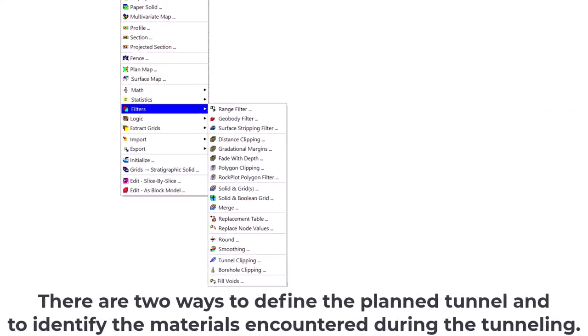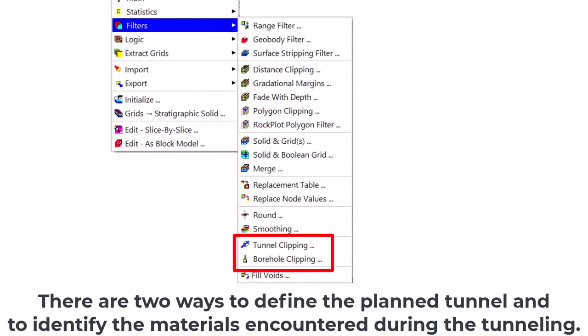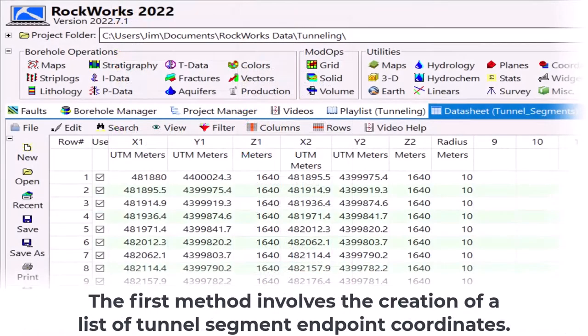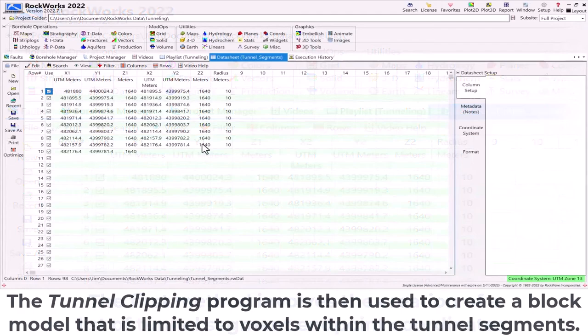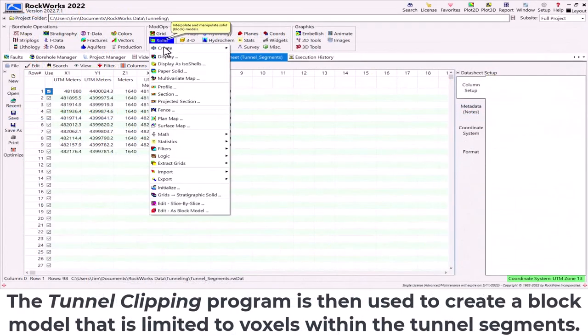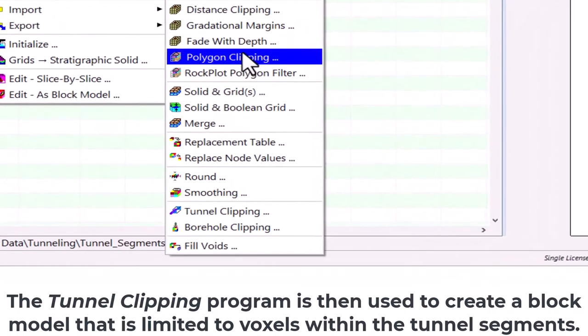There are two ways to define the planned tunnel and to identify the materials encountered during the tunneling. The first method involves the creation of a list of tunnel segment endpoint coordinates. The tunnel clipping program is then used to create a block model that is limited to voxels within the tunnel segments.